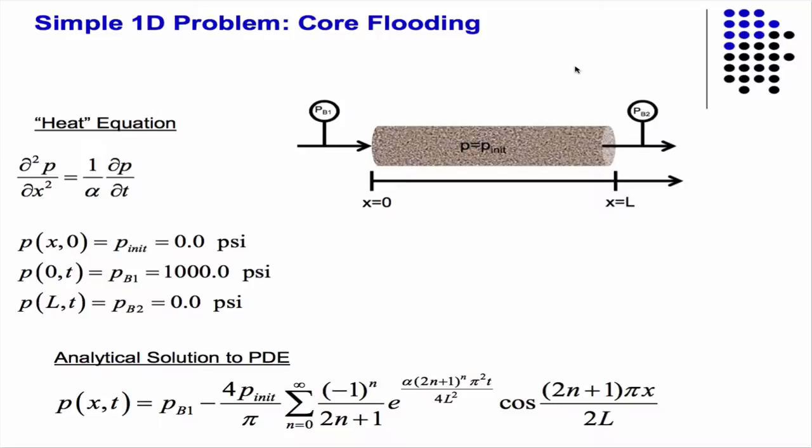So we're going to inject water on one end, fix the pressure, and on the other end, we're going to fix the pressure. So, in this case, you have pressure boundary conditions on each side.